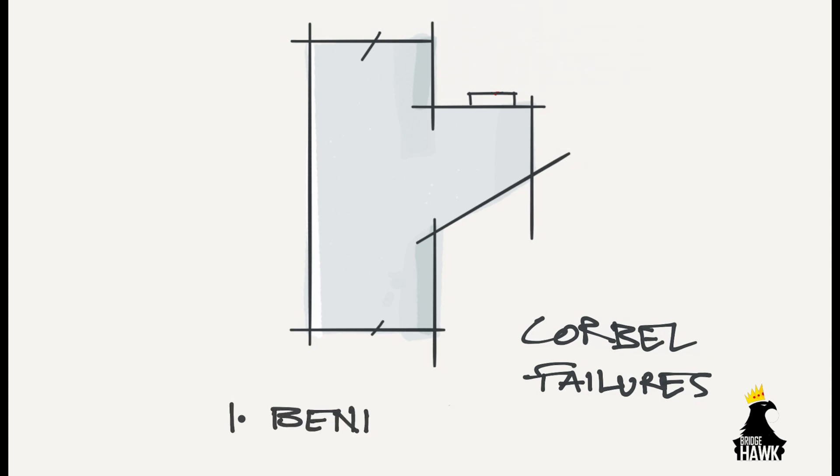Number one: Bending failure. In this type of failure, the corbel fails due to the high magnitude of moment upon the corbel member. The member is inadequately designed and hence cannot withstand the moment. The crack initially develops from the top.